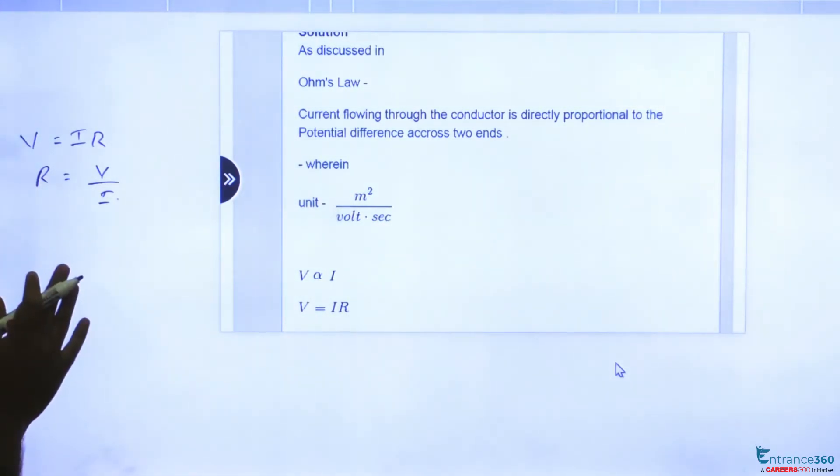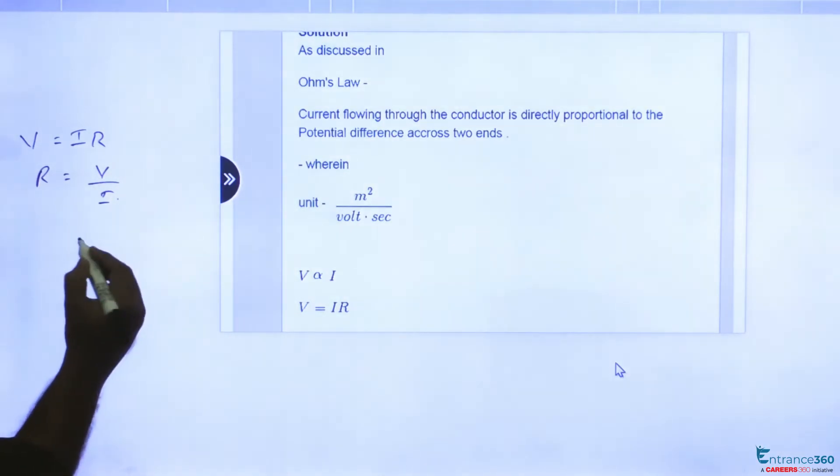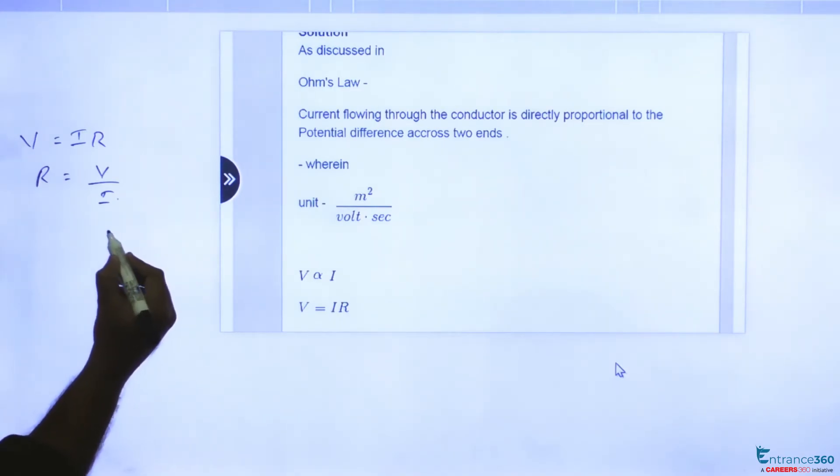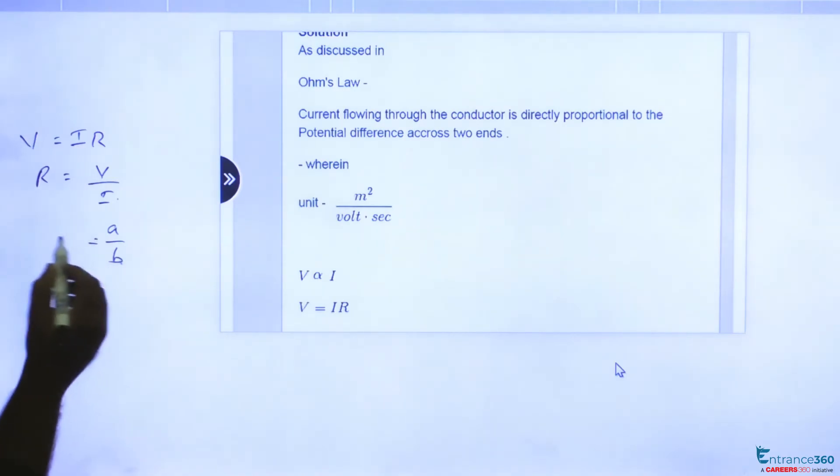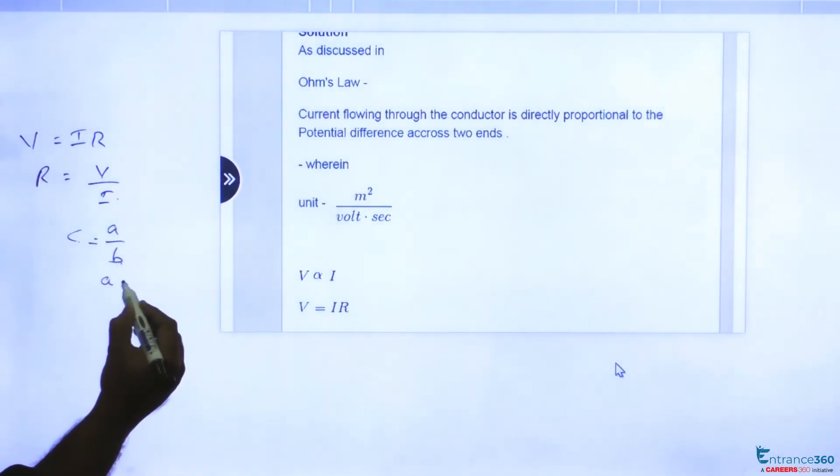From the first chapter, Physics and Measurement, you know that if error in measurement of A and B is given, and C equals A by B, then the net error will be delta A by A plus delta B by B.